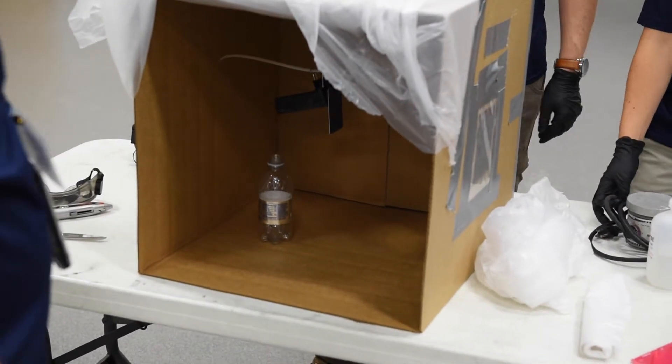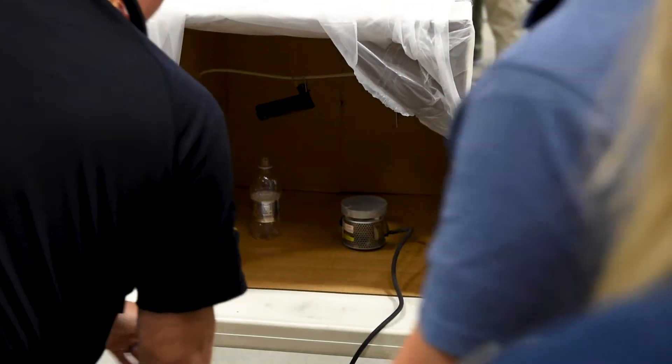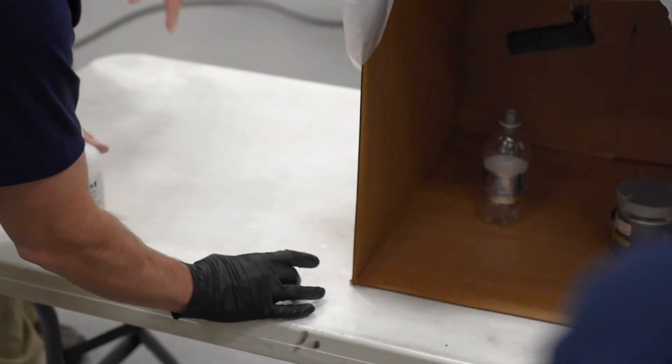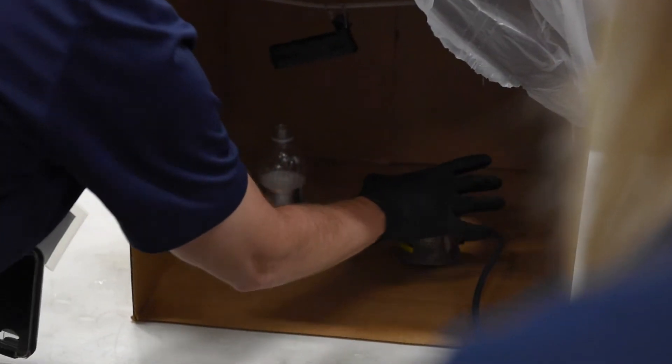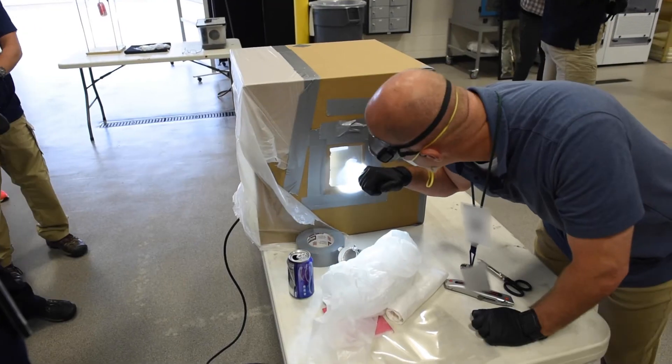We have a chamber to contain the fumes and add heat to it, so it becomes vaporous and flows around all the items and all the exposed surfaces to the vapor. Superglue locks onto the moisture and coats it.